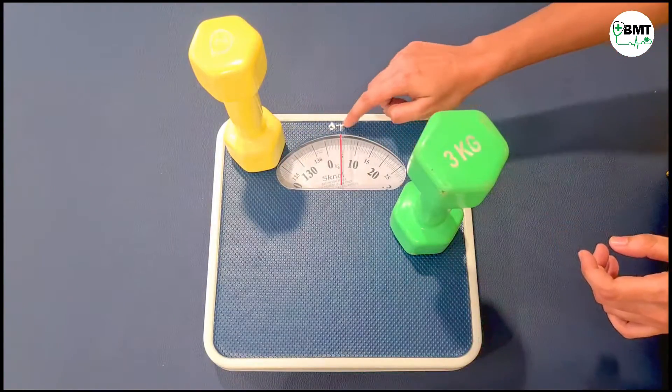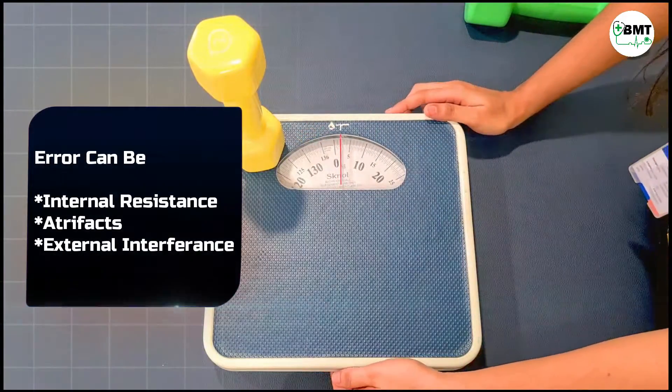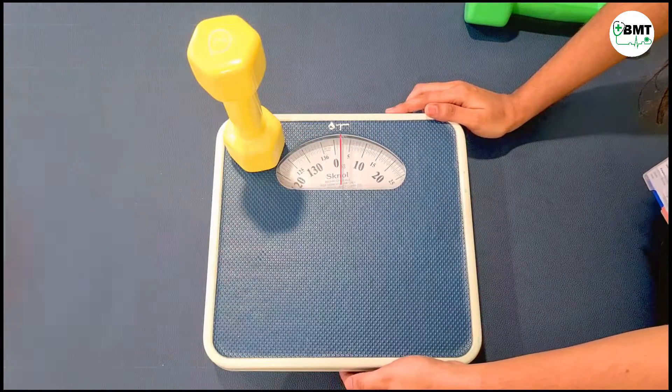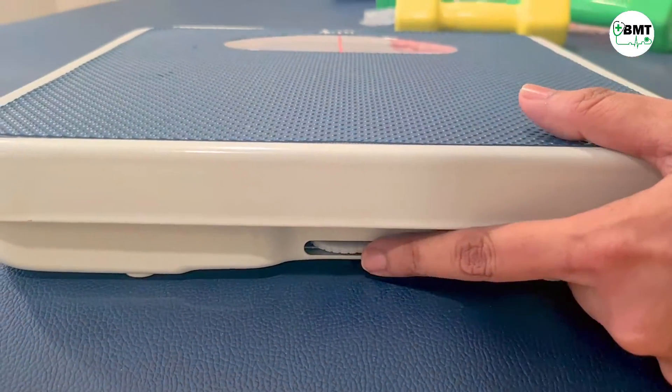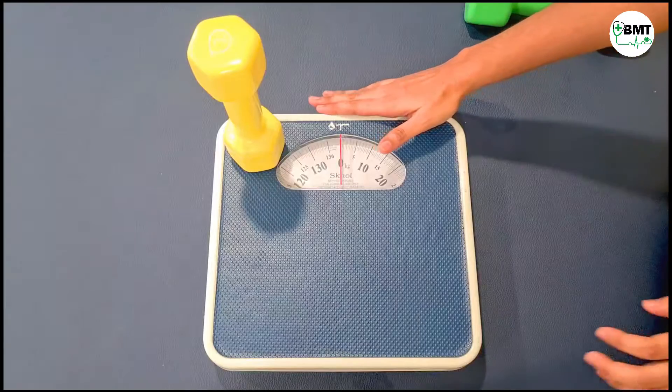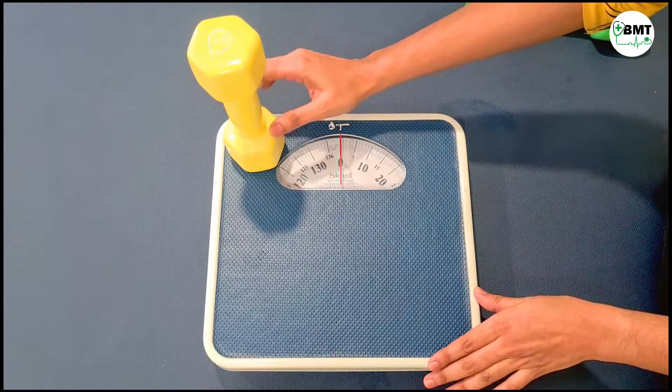So now to calibrate this, remove this. Now this is my error. So adjust it till zero. The adjustment can be done from here. So now I have calibrated it to zero with this resistance. That is your extra weight.